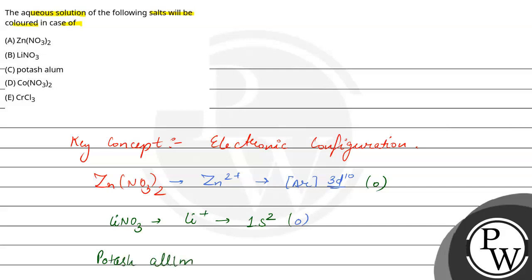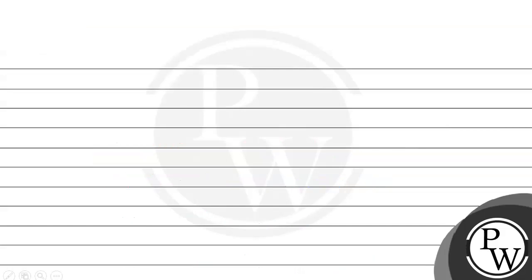The next one is potassium potash alum. Potash alum, the formula is KAl(SO4)2 plus 12 H2O. This is a salt and it is also colorless. It has no color. Next we have cobalt nitrate.